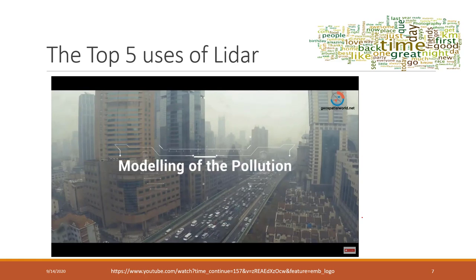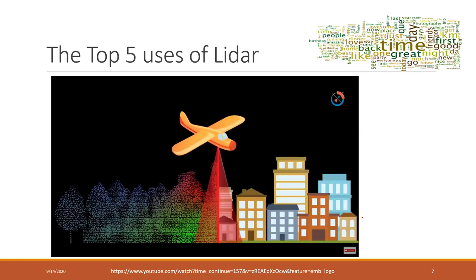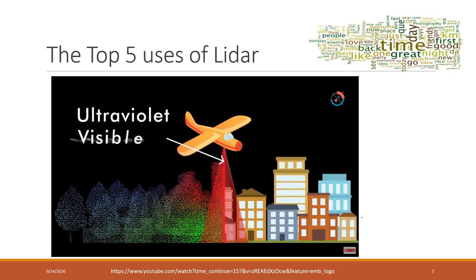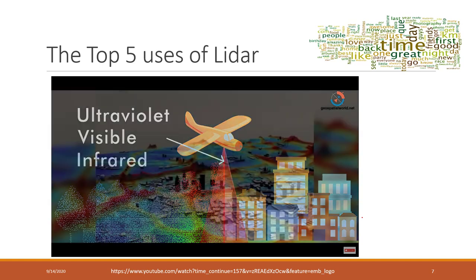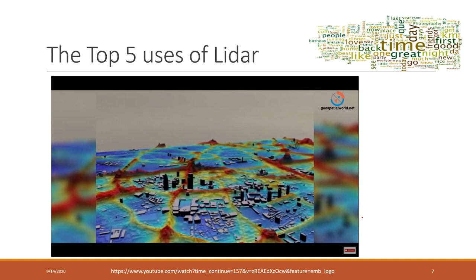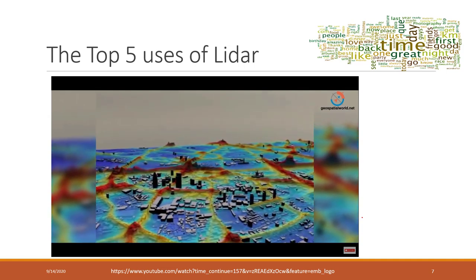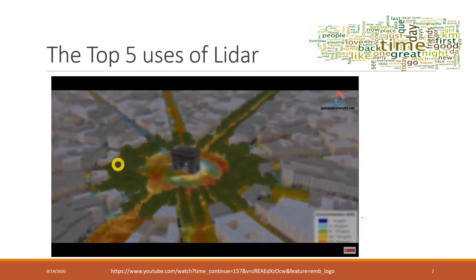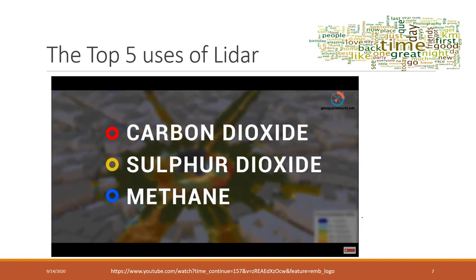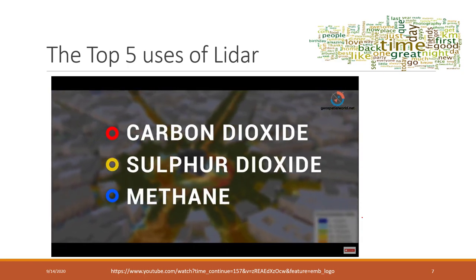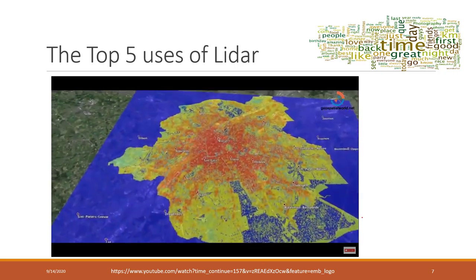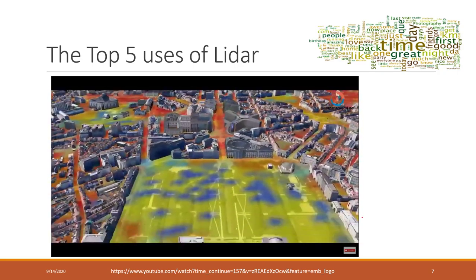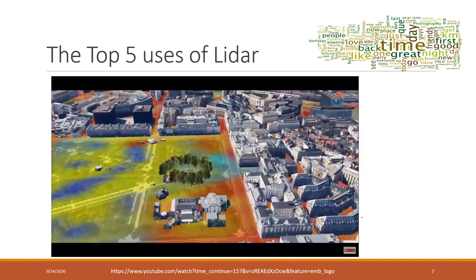Pollution modeling: LiDAR wavelengths operating in the ultraviolet, visible, or near-infrared regions can image particulate matter the same size or larger than the wavelength. LiDAR can detect pollutants such as carbon dioxide, sulfur dioxide, and methane, helping researchers create pollutant density maps for better city planning.